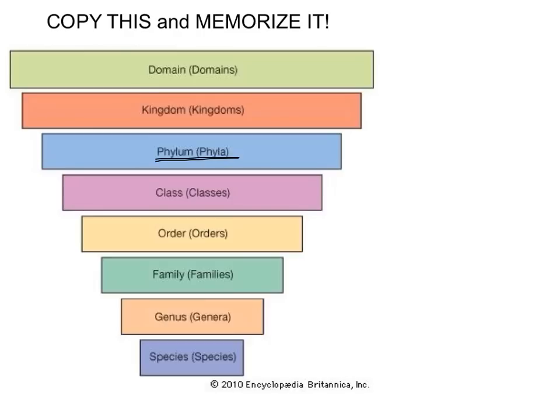I would like you to copy down this chart — draw it exactly how you see it. Draw domain with a big box at the top going all the way down to species, and make species the smallest one. Domain includes the most organisms; we only have three domains for the entire world. When we get down to species, we only have one organism that can be classified at that species level. Pause the video to copy this down.